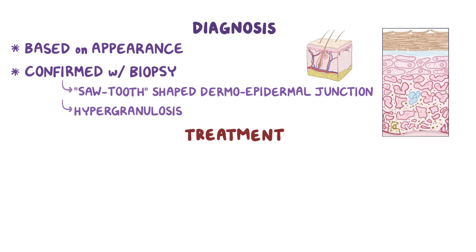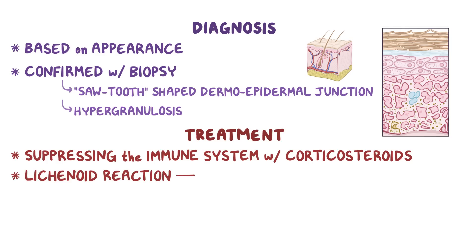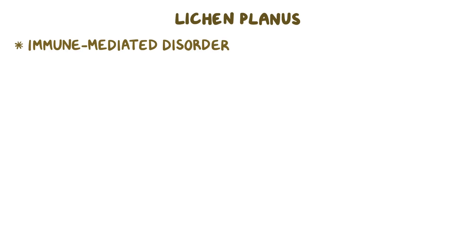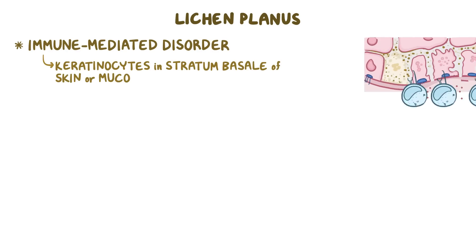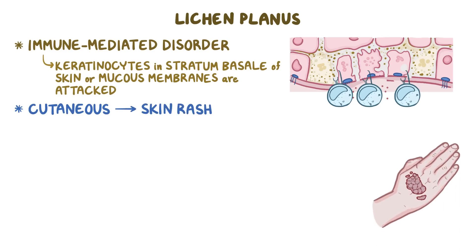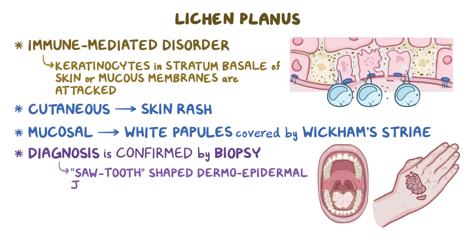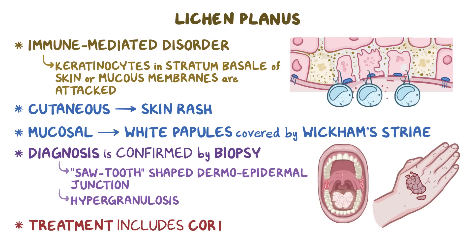The treatment of lichen planus is geared at suppressing the immune system with corticosteroids. In a lichenoid reaction, the trigger is known, so that trigger is removed. As a quick recap: lichen planus is an immune-mediated disorder in which keratinocytes in the stratum basale of the skin or mucous membranes are attacked. Individuals with the cutaneous form have a skin rash, while people with the mucosal form often have white papules covered by Wickham striae. Diagnosis can be confirmed with a biopsy that shows a sawtooth-shaped dermoepidermal junction and a thickened stratum granulosum, or hypergranulosis. Treatment includes corticosteroids.